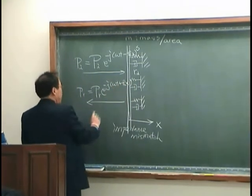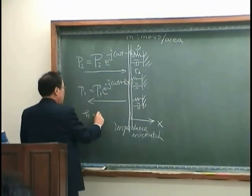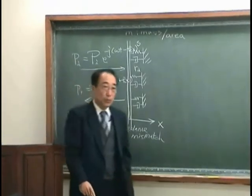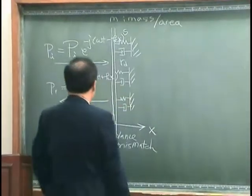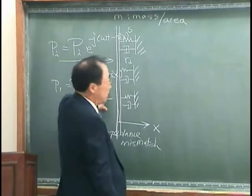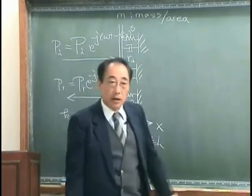The k, where omega over c, c is the speed of propagation, and I assume that we have the same medium over here as well as over here.